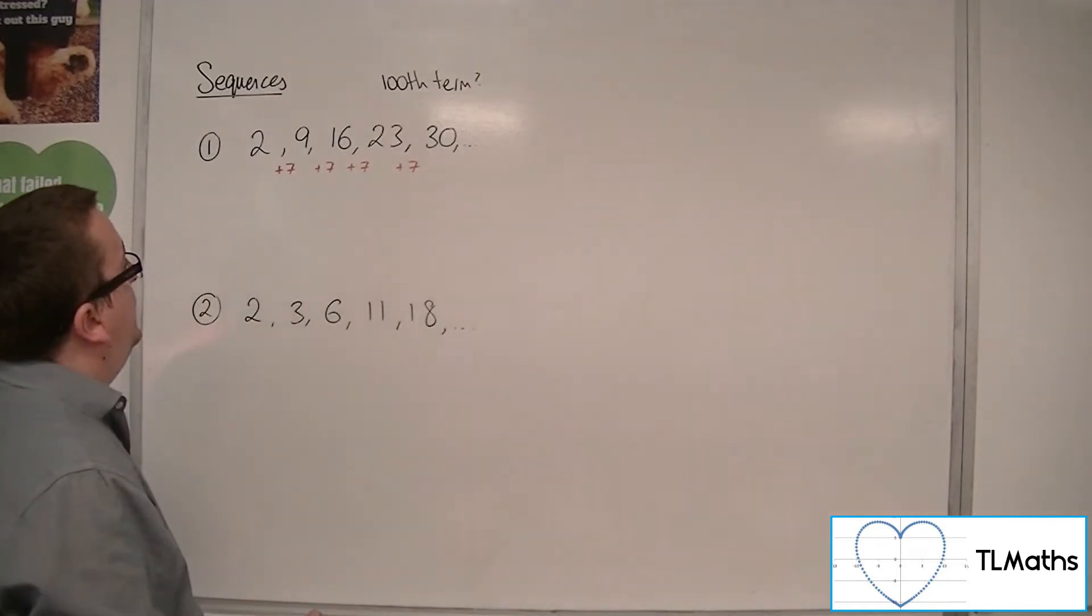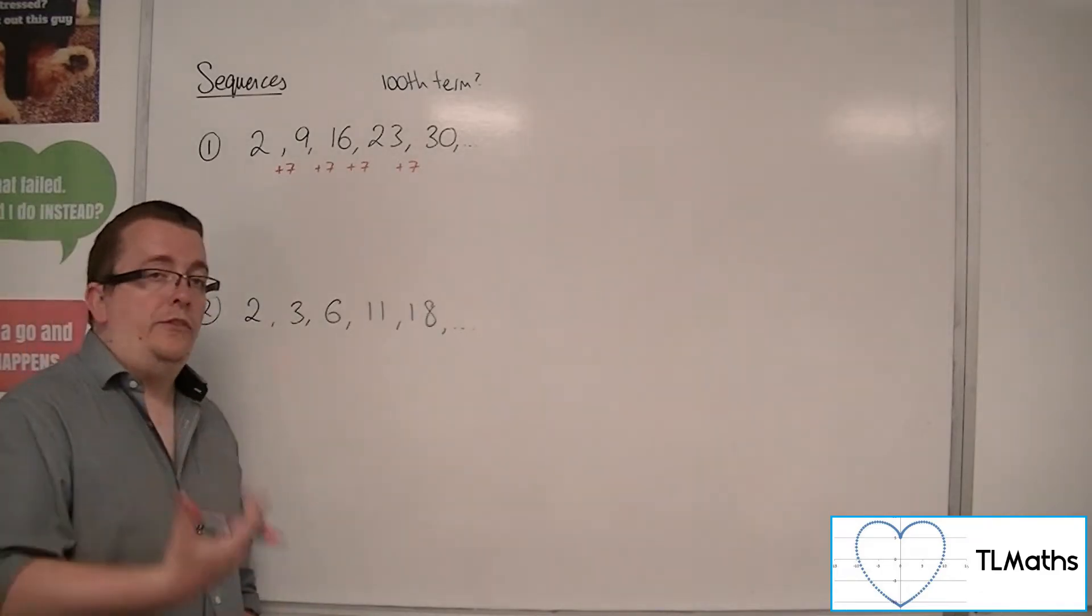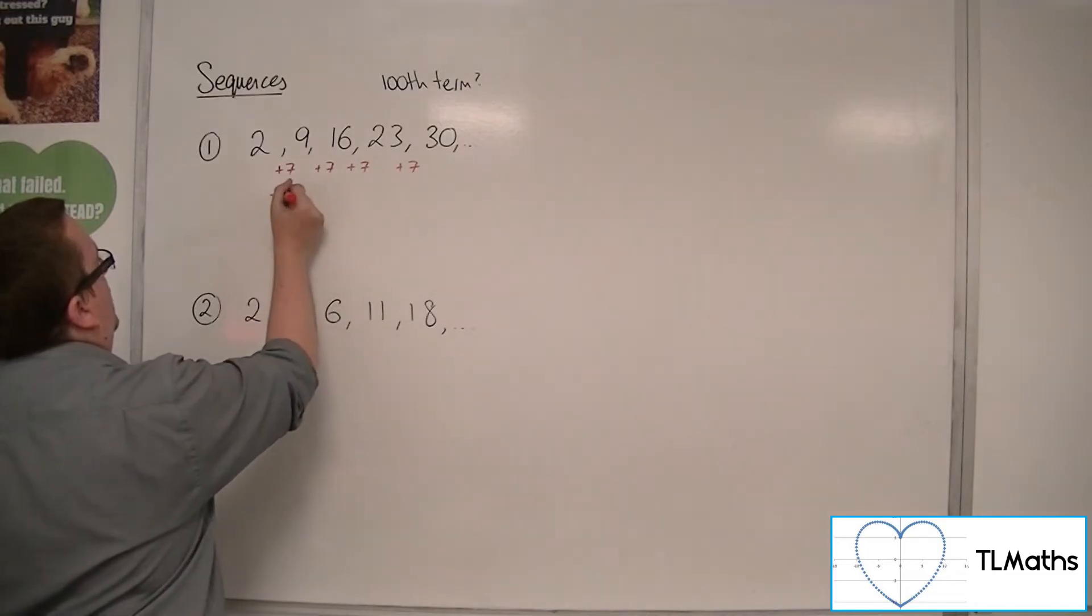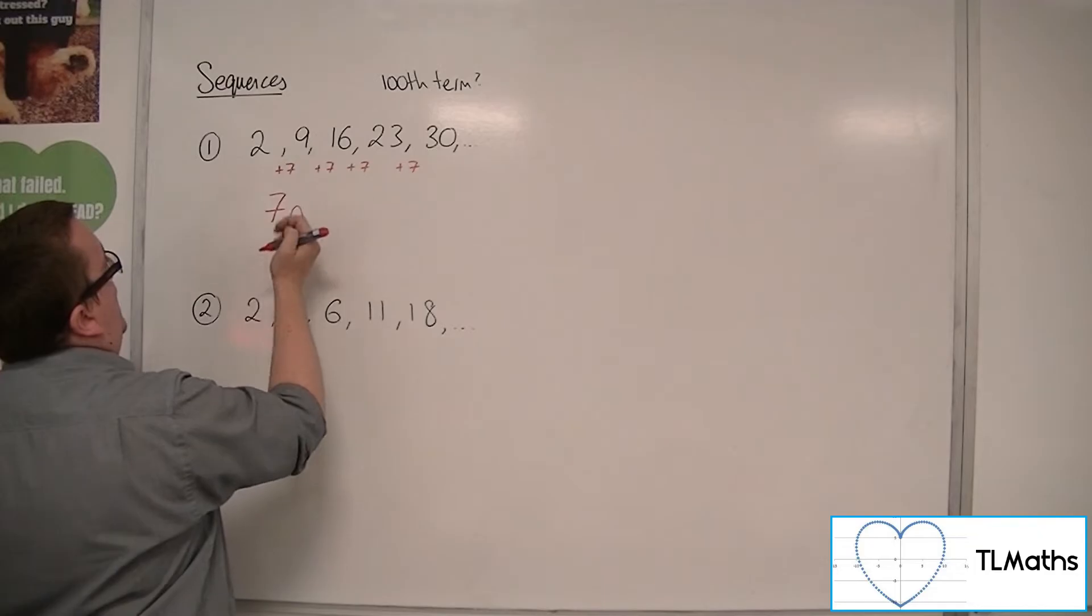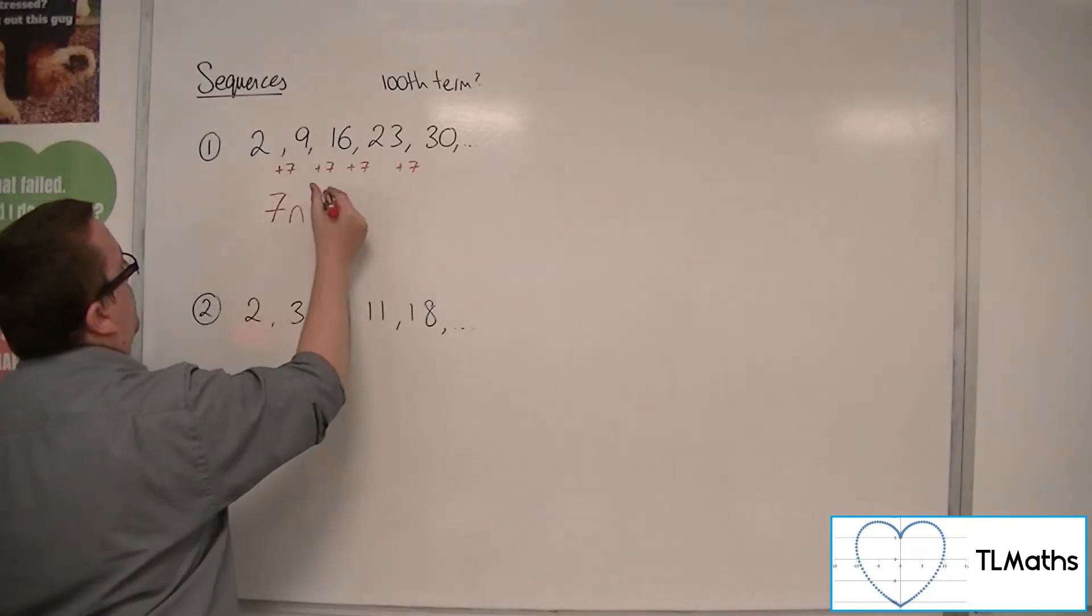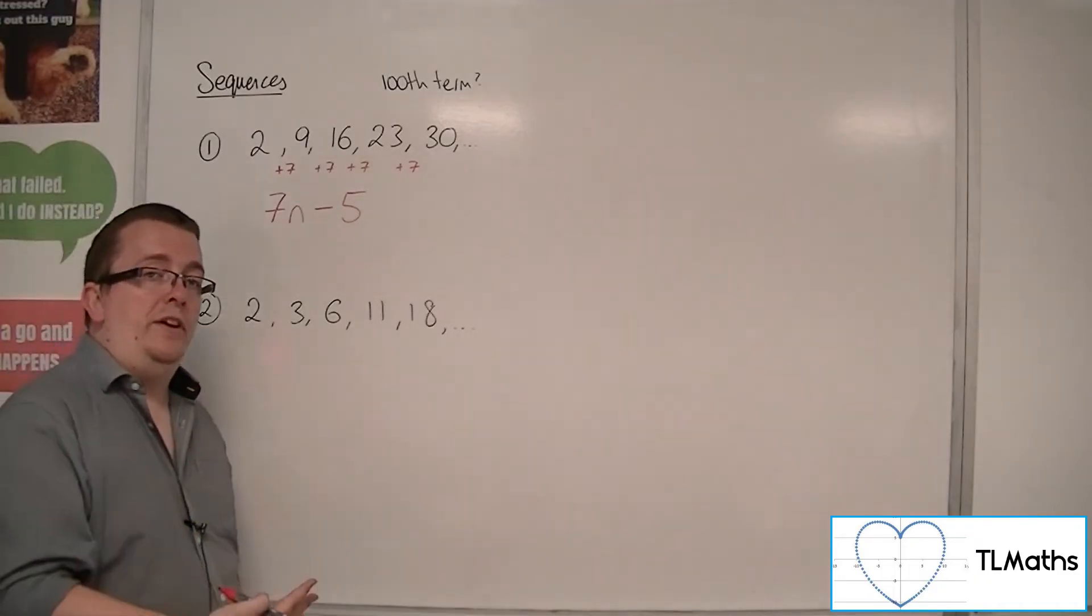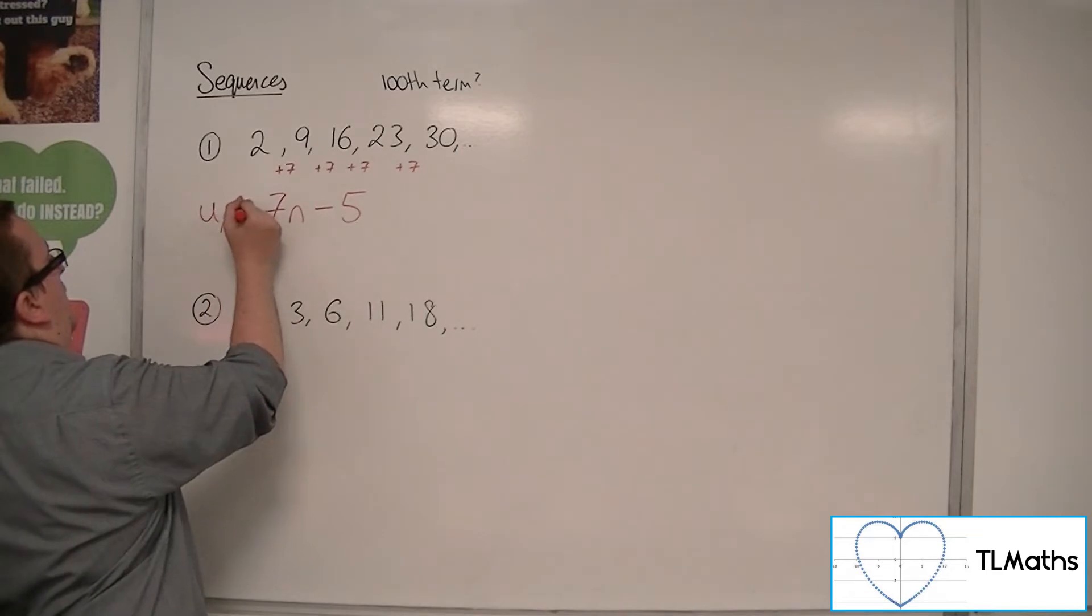That means that we have a linear sequence here. And so the nth term would be 7n. This number goes in front of the n. And then how do we get from 7 back to 2? We've got to take away 5. So 7n minus 5 is the nth term of this sequence.